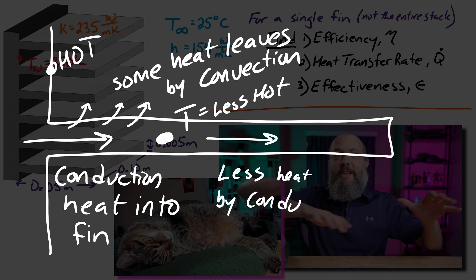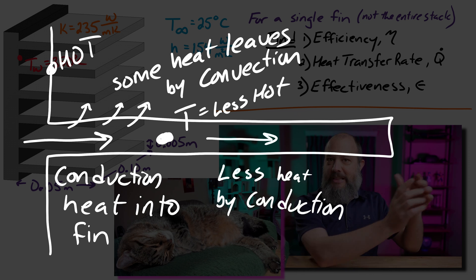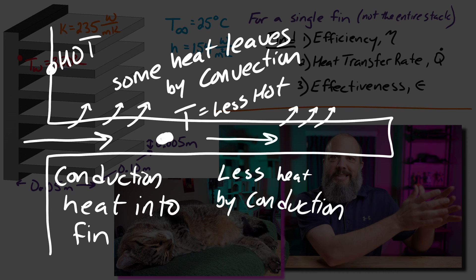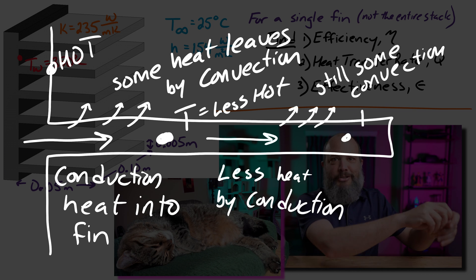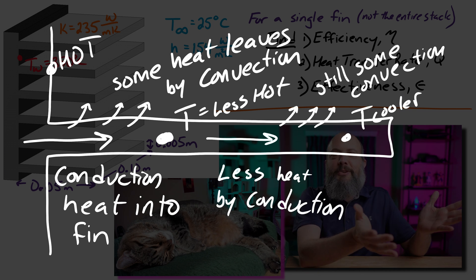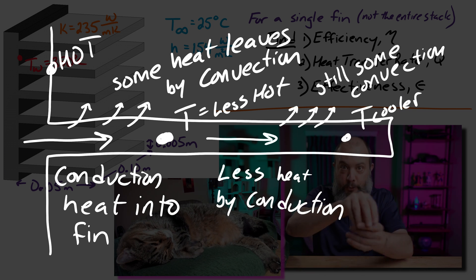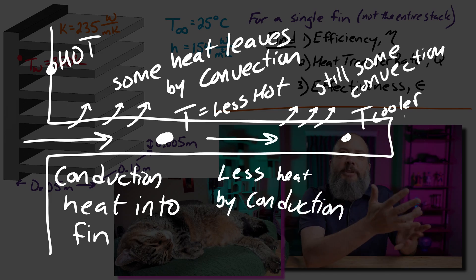And the longer and longer you make your fin, eventually you'd make it long enough so that the end of the fin is actually the same temperature as the air. And then making it further longer doesn't help heat transfer at all because it's already the same temperature as the air, so there wouldn't be any more heat transfer. Essentially all the heat entering the fin would have already escaped to the atmosphere by convection.